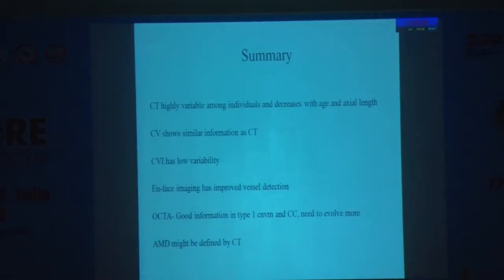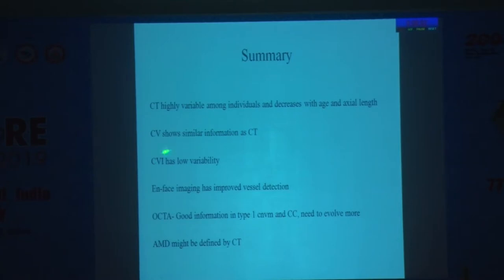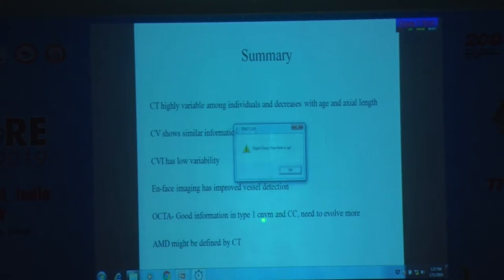To summarize: choroidal thickness is highly variable according to disease, age, and axial length. Choroidal volume shows similar information as CT. CVI has lower variability. Force imaging has improved vessel detection. OCTA gives good information about type 1 CNV — now called MNV rather than CNV. AMD might be redefined with choroidal thickness. Thank you.